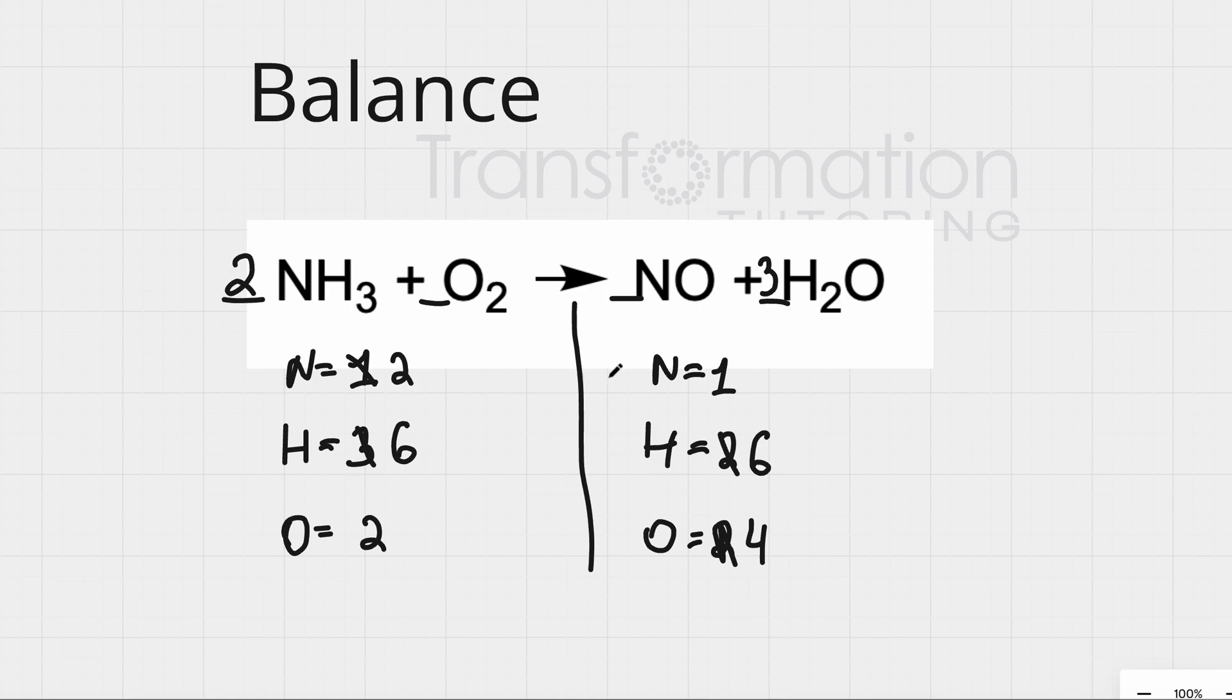Also, I can see that my nitrogen is now not balanced. So I am going to balance nitrogen next. I have 2 on the left, 1 on the right. So I will add 2 here. Now my nitrogen is 2. Now it's balanced. And oxygen changes yet again. 2 plus 3 is 5. So now my nitrogen is balanced, my hydrogen is balanced, but my oxygen is not.